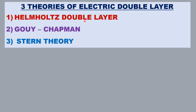There are three theories to explain the electrical double layer: the Helmholtz double layer theory, the Gouy–Chapman theory, and the Stern theory of the double layer.